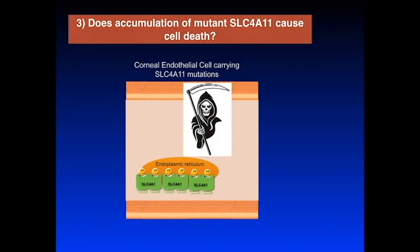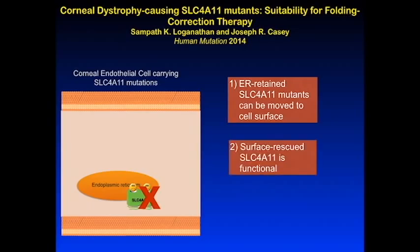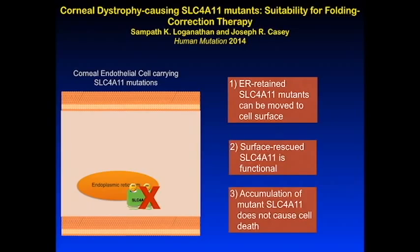The third focus of the paper is to investigate whether the accumulation of mutant SLC4A11 caused cell death. In order to find whether the mutant SLC4A11 accumulated in the endoplasmic reticulum causes cell death, we carried out a couple of assays and found that the mutant SLC4A11 does not cause cell death. The conclusions are that ER-retained SLC4A11 mutants can be moved to the cell surface, once moved it is functional, and the accumulation of mutant SLC4A11 in the endoplasmic reticulum by itself does not cause cell death.